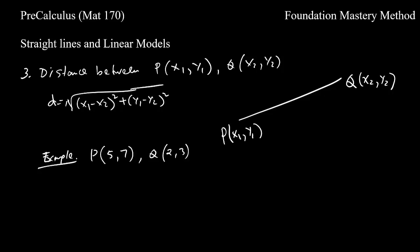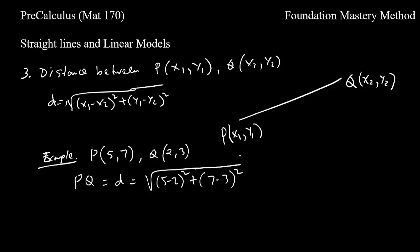For example, let P = (5,7) and Q = (2,3). The distance PQ equals the square root of (5-2)² + (7-3)², which simplifies to the square root of 3² + 4², giving the square root of 9 + 16 = square root of 25, which equals 5.